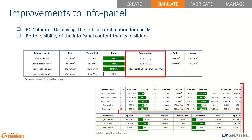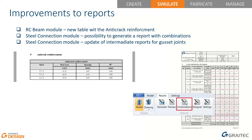Improvements to info panels include: in the column module, a new column in the table shows which combination was decisive for a given reinforcement — providing critical combination info for top and bottom longitudinal bars. Additionally, to make it easier to view table content in the info panel, a vertical side slider and separate horizontal sliders for each table have been added, so users can scroll without needing to resize the window.